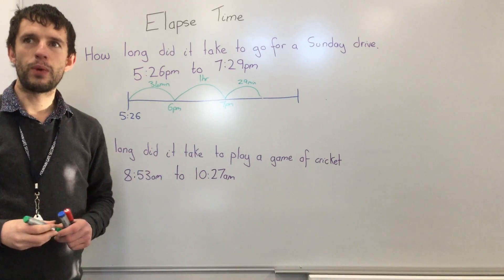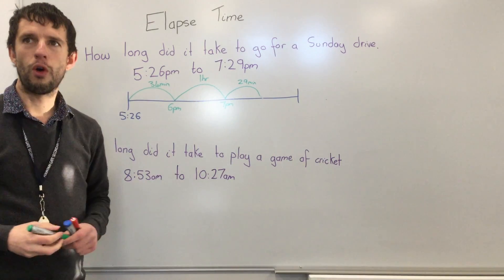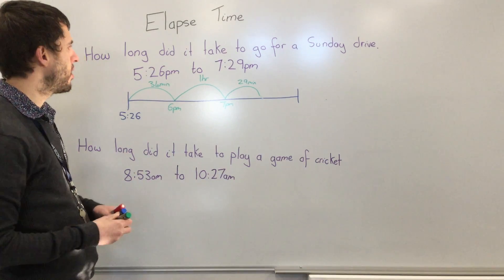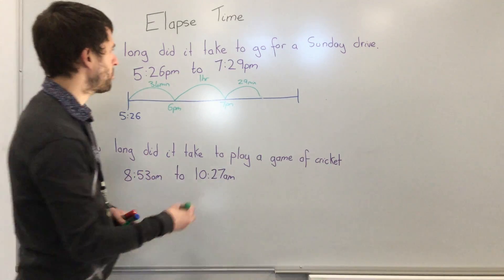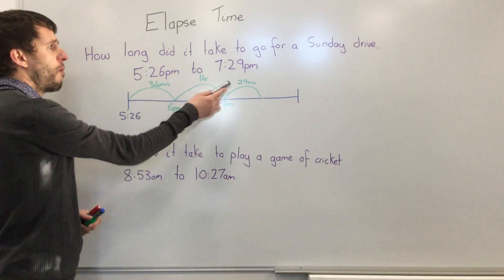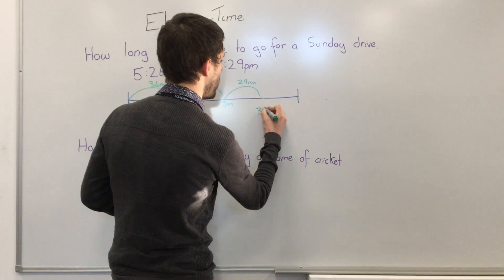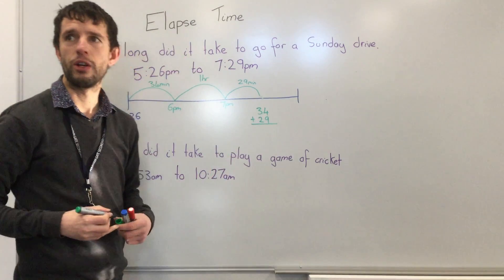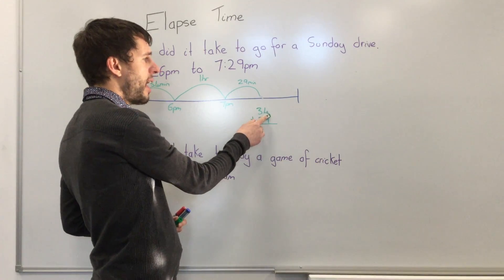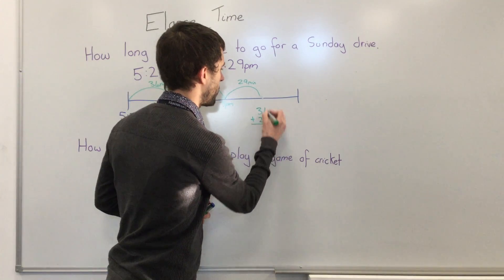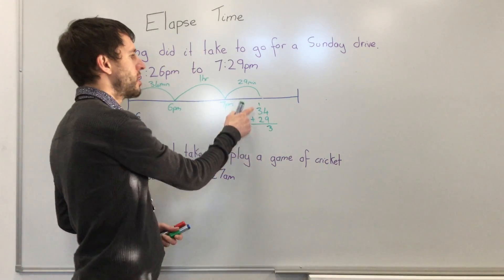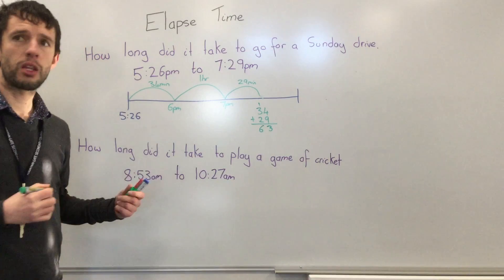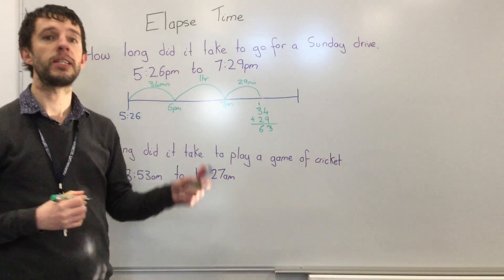The next thing we need to do is add all of our minutes up and our hours together. So far I know I've got 34 plus 29 minutes. I can add those together: 4 plus 9 equals 13, carry the 1 — 3 plus 1 plus 2 equals 6. So that's 63 minutes, and I know 60 minutes is an hour.